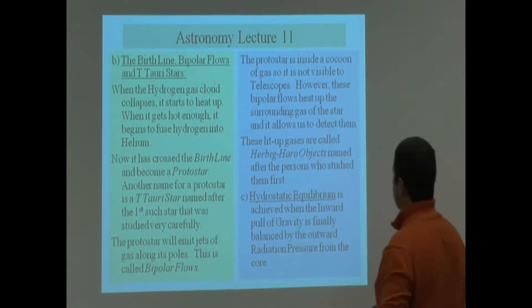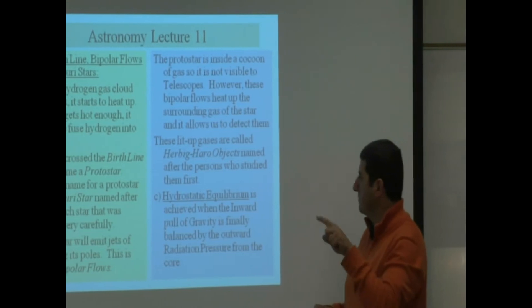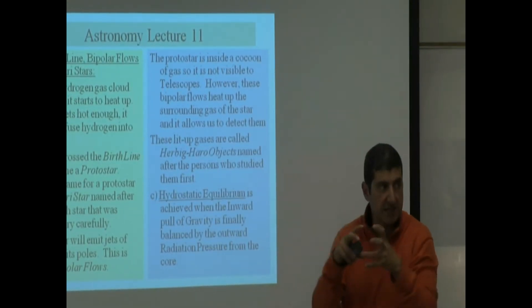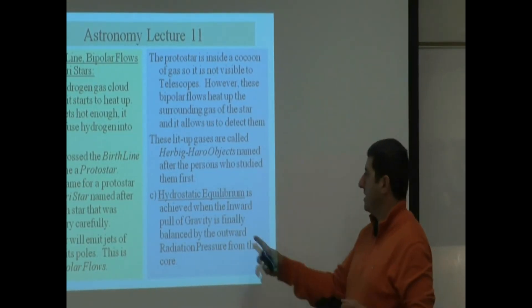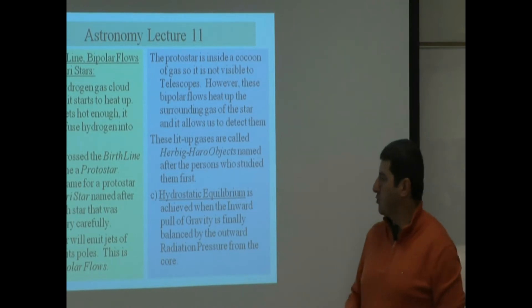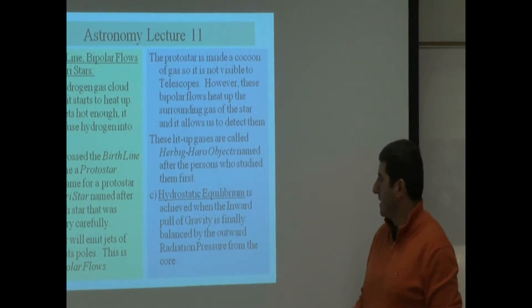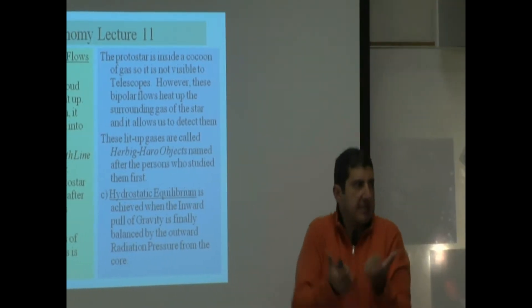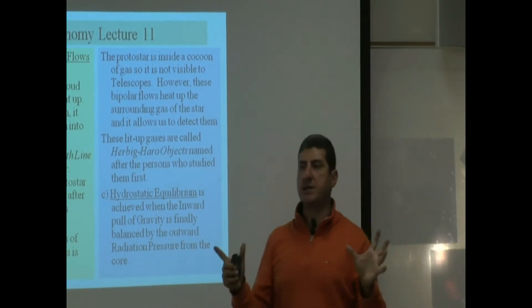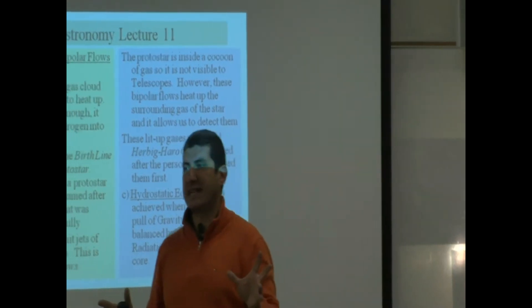So, hydrostatic equilibrium is achieved when the inward pull of gravity, which is causing the star to collapse, is finally balanced by the outward radiation pressure from the core of the star, and then that pressure pushes the star out. Finally the star stops collapsing.